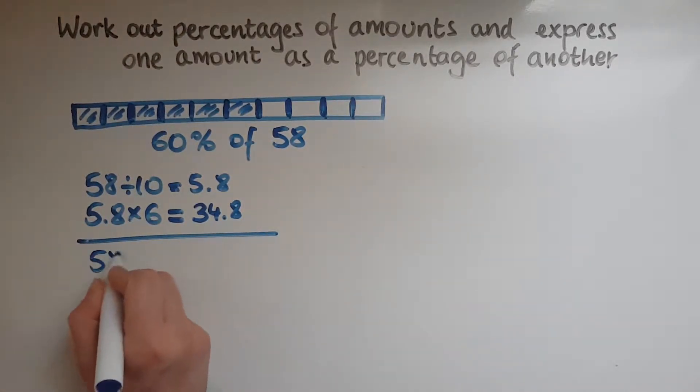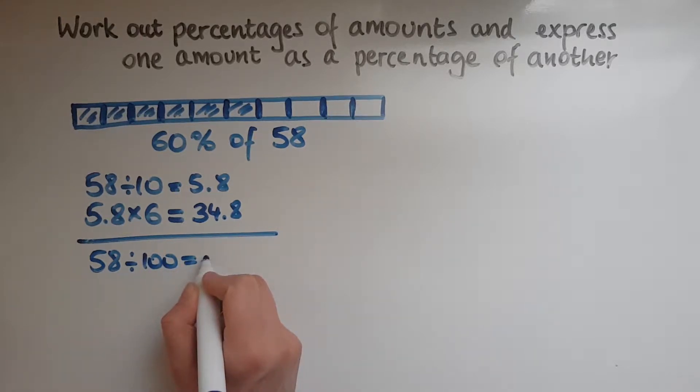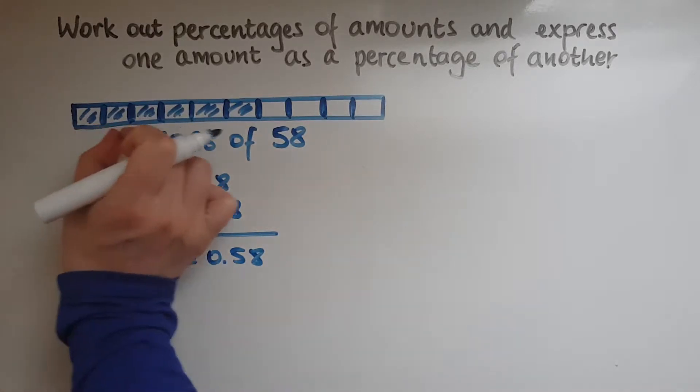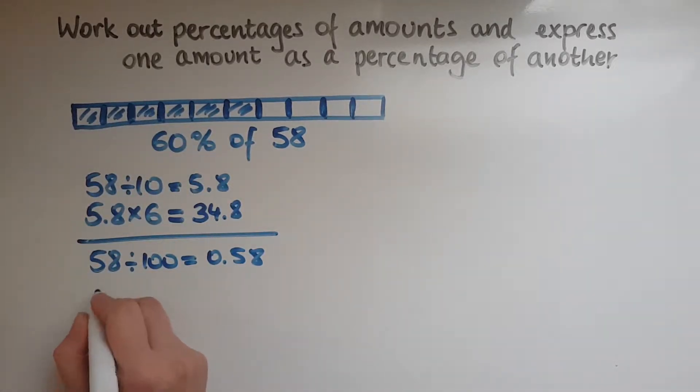So 58 divided by 100 gives us 0.58, and then we multiply it by 60 to make it 60%. So 0.58 times 60 gives us 34.8.